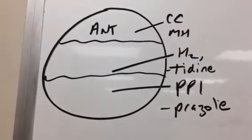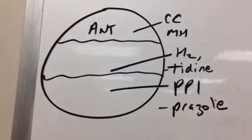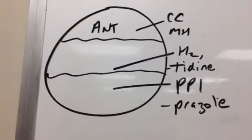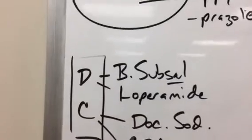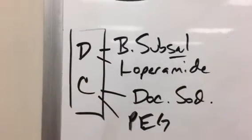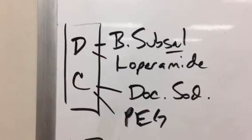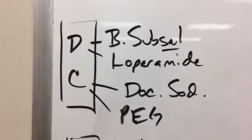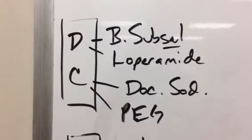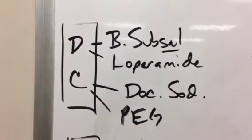Then the H2 blockers end with Tidine, T-I-D-I-N-E. Proton pump inhibitors end with Prezole. Then we'll go down to diarrhea and constipation, so bismuth subsalicylate and loperamide. Then docusate sodium and polyethylene glycol for constipation.